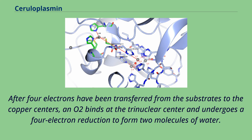After four electrons have been transferred from the substrates to the copper centers, an O2 binds at the trinuclear center and undergoes a four-electron reduction to form two molecules of water.